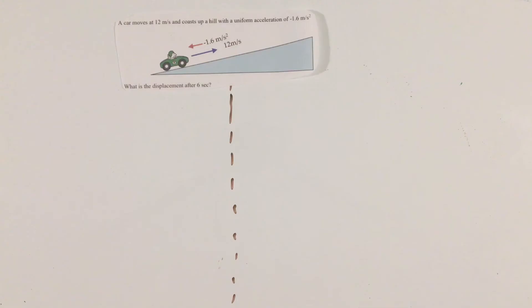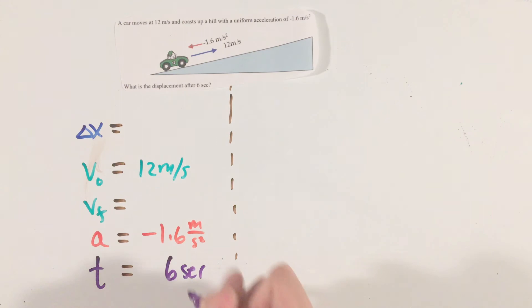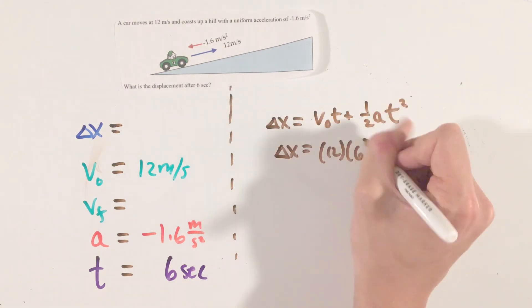Now, this question asking for the displacement of a car is no different from before. Writing out our list of variables, the only interesting thing here is the car is decelerating, or has a negative acceleration. Now, lucky for us, this question basically explicitly writes the negative sign.